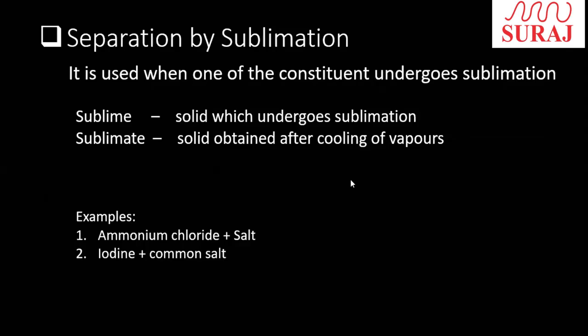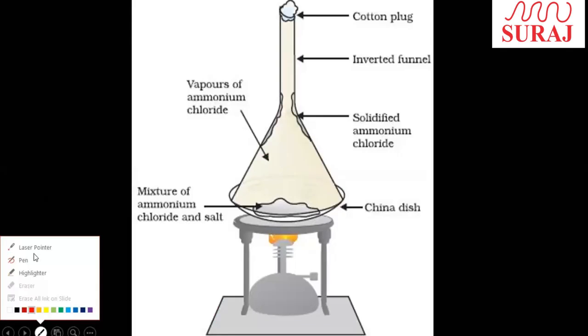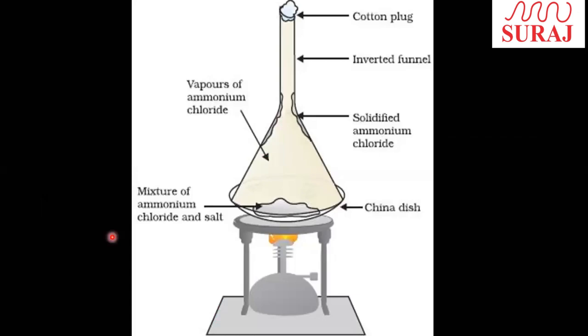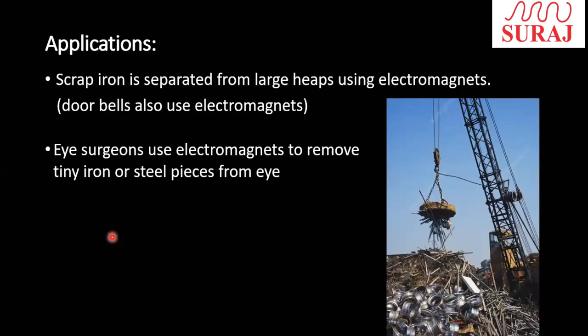This was the whole apparatus for the sublimation process, and we watched a video on it. The next method we discussed is separation by magnets, where one component is attracted to a magnet and the other is not.